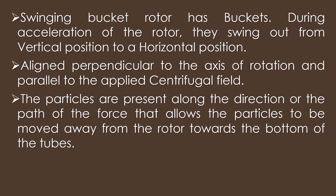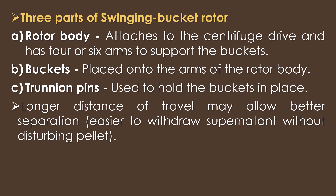In swinging bucket rotors, the particles are present along the direction of the force, which allows the particles to be moved away from the rotor towards the bottom of the tubes. A swinging bucket rotor system consists of three parts: the rotor body, buckets, and trinoin pins. The rotor body attaches to the centrifuge drive and has four or six arms to support the buckets. The buckets are placed onto the arms of the rotor body, and trinoin pins are used to hold the bucket in place. Long distances of travel may allow better separation, making it easy to withdraw supernatant without disturbing the pellet.